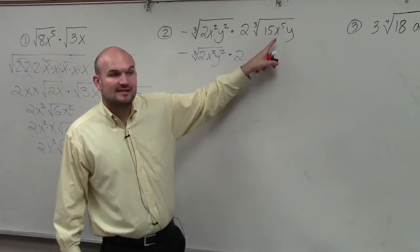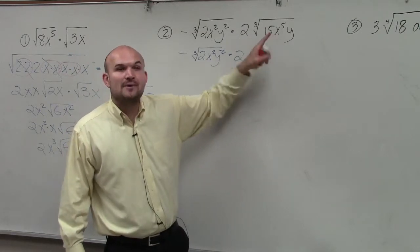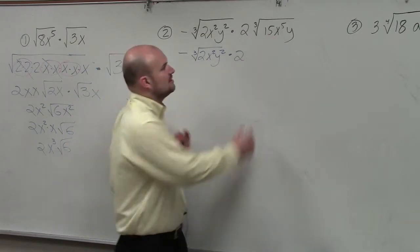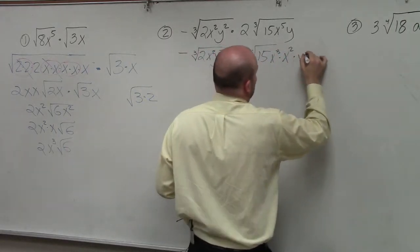But I can write x to the fifth as x cubed times x squared. By doing it that way, I can take the cube root of x cubed. So I'll rewrite this as 15x cubed times x squared times y.